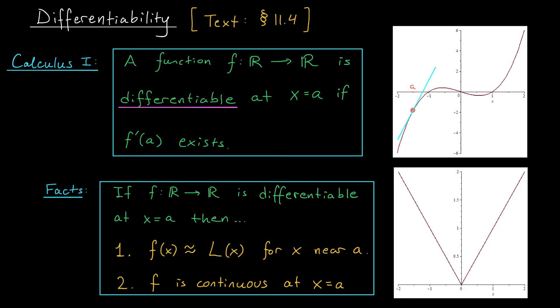The other nice thing that comes from differentiability is continuity. If you happen to know that your function is differentiable, then it's automatically continuous — we don't have any breaks in the function. The converse is not true, however. You can have a continuous function, like for example the absolute value function, that lacks the property of differentiability. At x equals 0, the function has a cusp, so it's not differentiable there, but it is continuous.